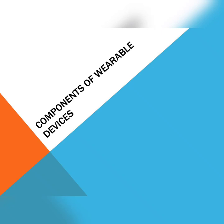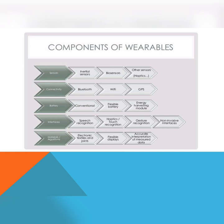In this video, we are going to discuss about components of wearable devices. These are the classification of components of wearable devices. First one is sensors. Sensors will sense — for example, if it is a temperature sensor, it will sense a temperature. It is basically an input device. Examples for sensors are inertial sensor, biosensor, proximity sensor, gyroscope sensor, gas sensor, and other sensors.